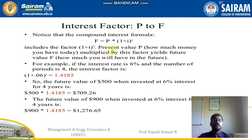The interest factor P to F: notice that the compound interest formula F = P × (1 + i)^n includes the factor (1 + i)^n. You multiply the present value P (how much money you have today) by this factor to get the future value F (how much you will have in the future). For example, if the interest rate is 6% and the number of periods is 4, the interest factor is (1 + 0.06)^4 = 1.2625... The future value of 500 dollars invested at 6% interest for 4 years is 500 × 1.2625 = 631.24 dollars, and the future value of 900 dollars at 6% for 4 years is 900 × 1.2625 = 1136.19 dollars.